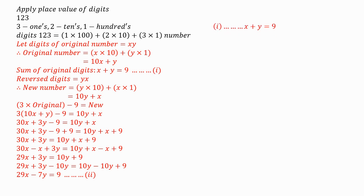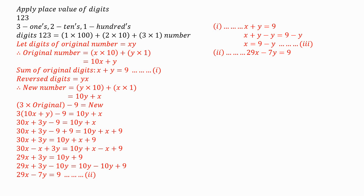From Equation 1, where we had X plus Y equals 9, we rearrange to get X equals 9 minus Y — that is Equation 3. From Equation 2 we have 29X minus 7Y equals 9. Since we have written X in terms of Y, we substitute X with 9 minus Y: 29 times (9 minus Y) minus 7Y equals 9. Opening the bracket: 261 minus 29Y minus 7Y equals 9. Then we solve for Y.